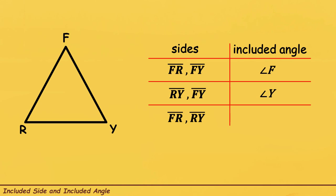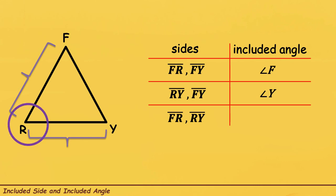Now, let us try to find the Included Angle of Line Segment FR and Line Segment RY. Hanapin ulit natin sa triangle: Line Segment FR — ito yun — and Line Segment RY. At ang nasa gitna ng angle nila is Angle R. So, the Included Angle of Line Segment FR and Line Segment RY is Angle R.